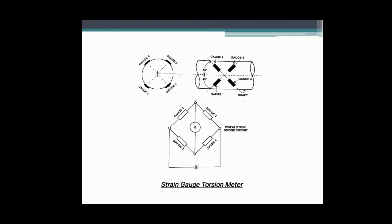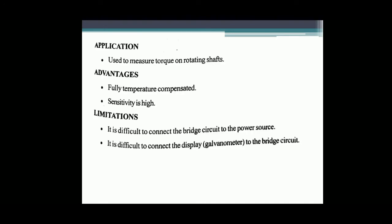Applications: the strain gauge torsion meter is used to measure torque on rotating shafts. Advantages: it is fully temperature compensated and sensitivity is high. Limitations: it is difficult to connect the bridge circuit to the power source and difficult to connect the display to the bridge circuit. These are some of the instruments used to measure torque. Thank you.